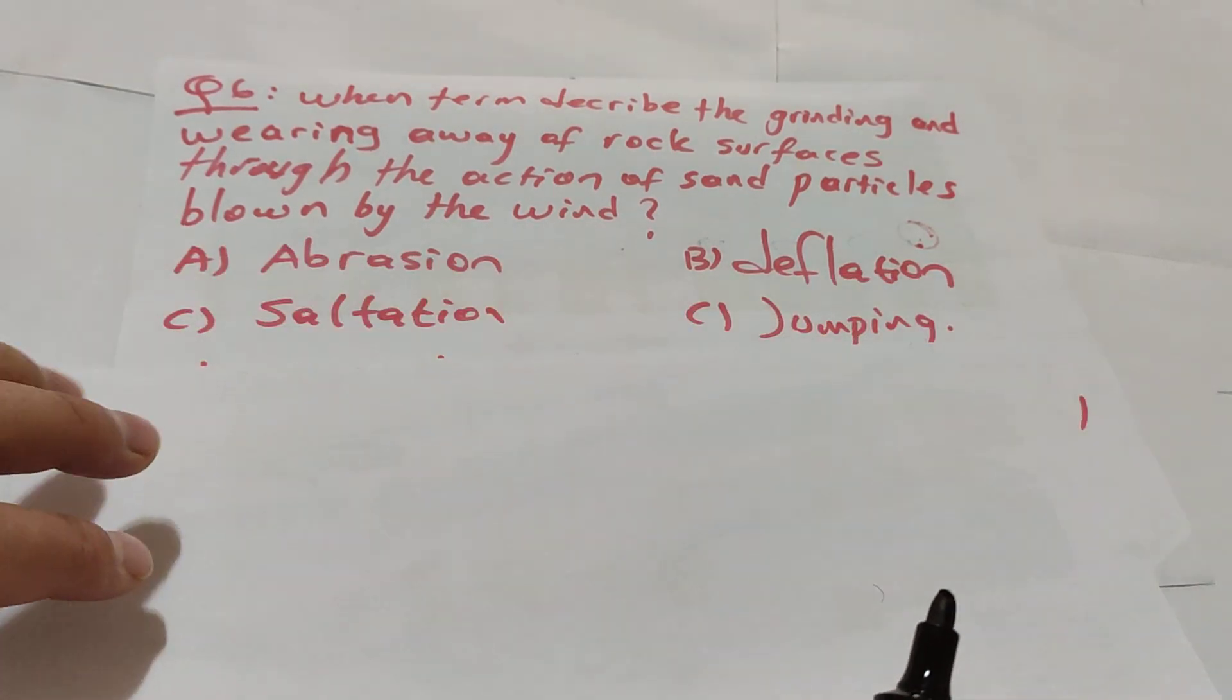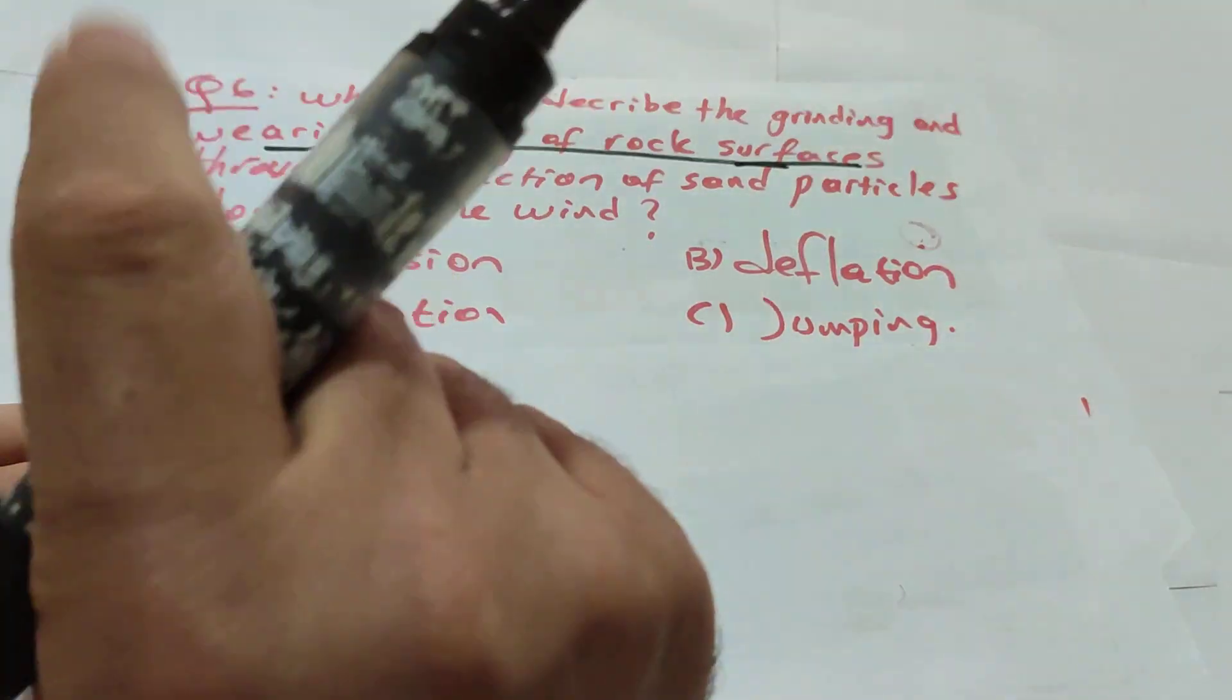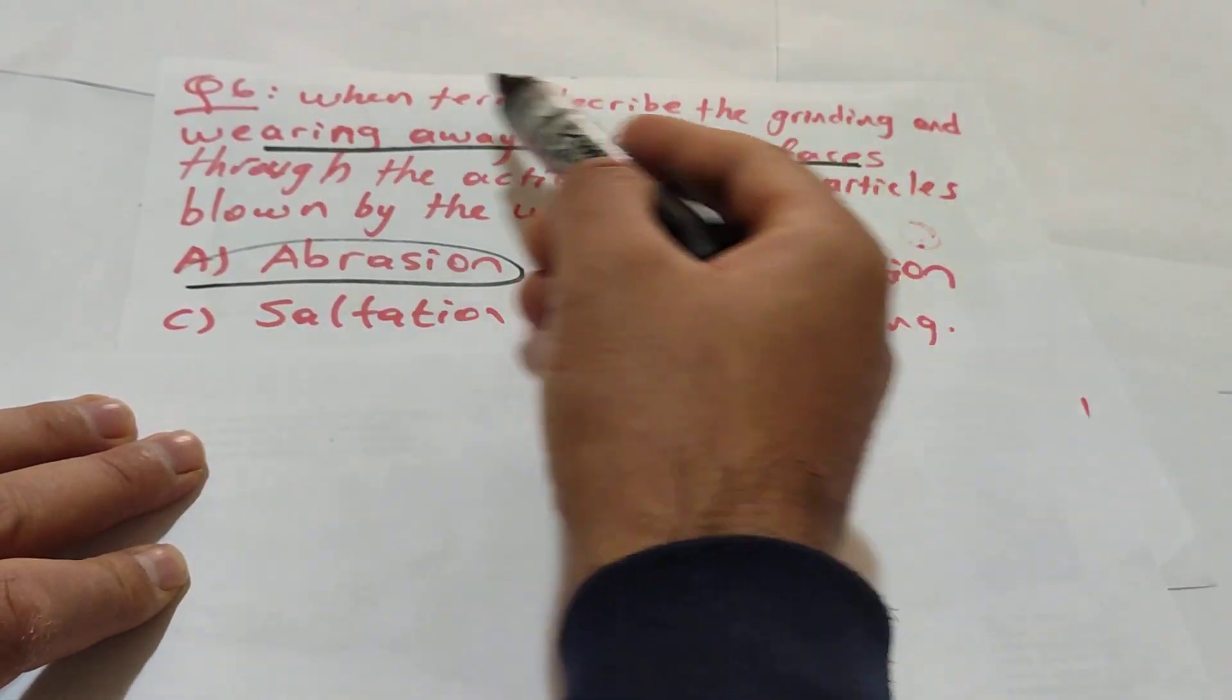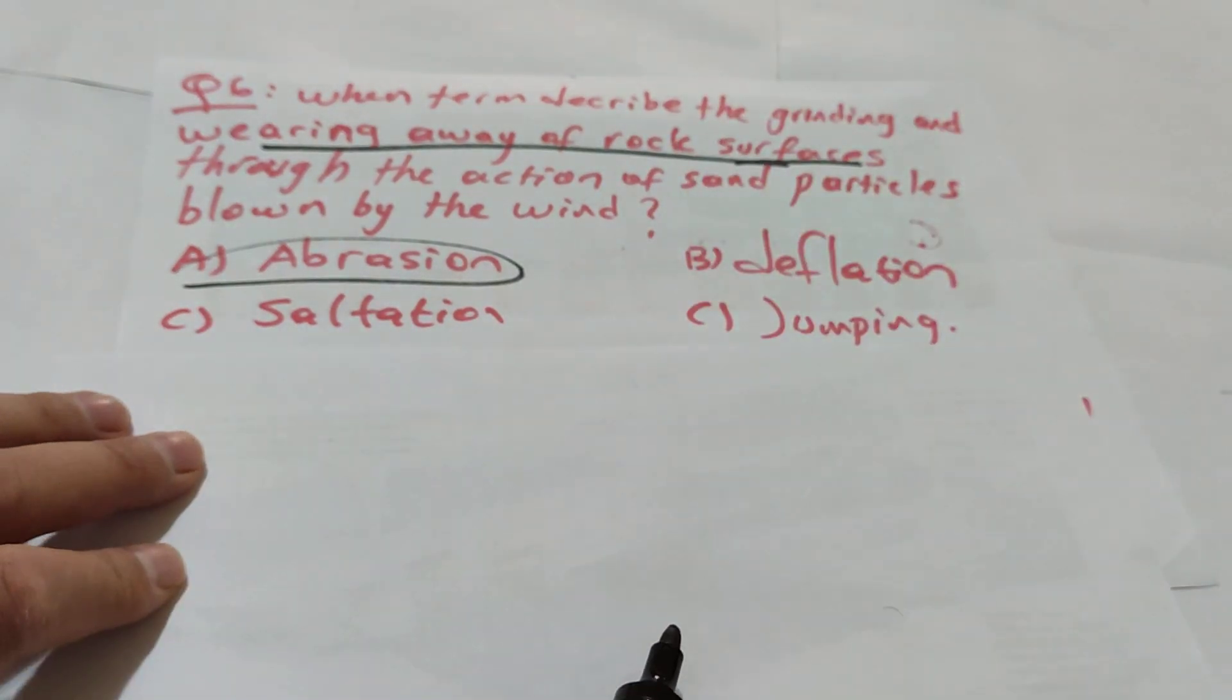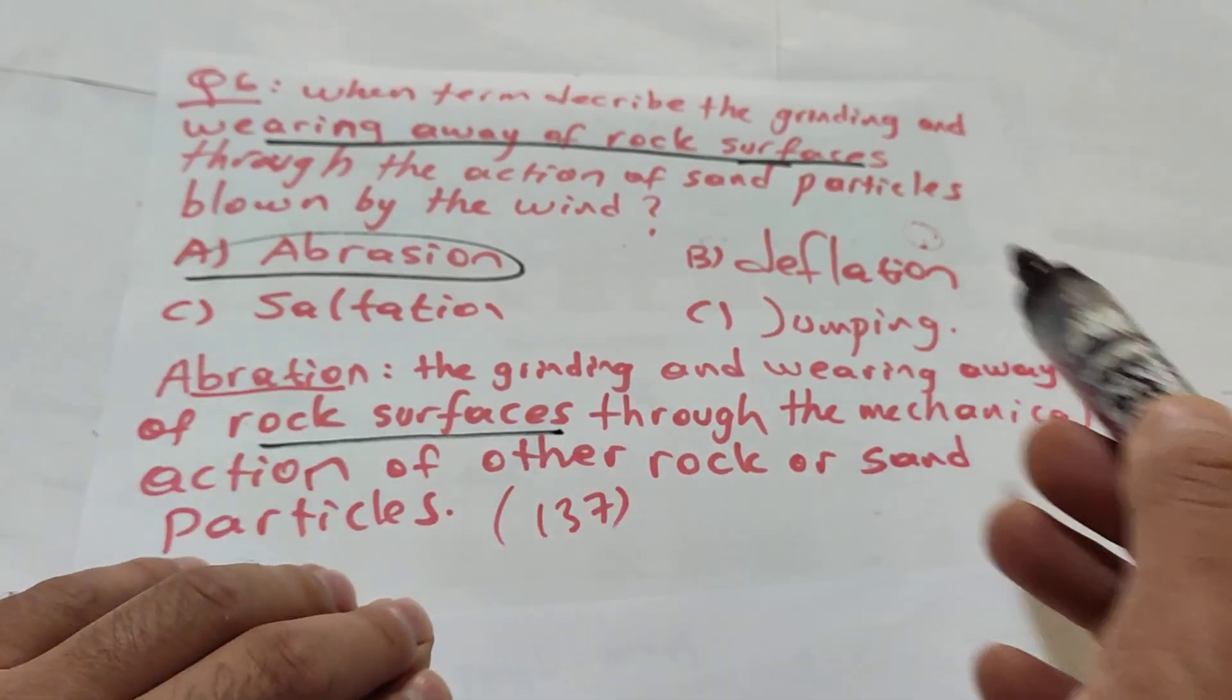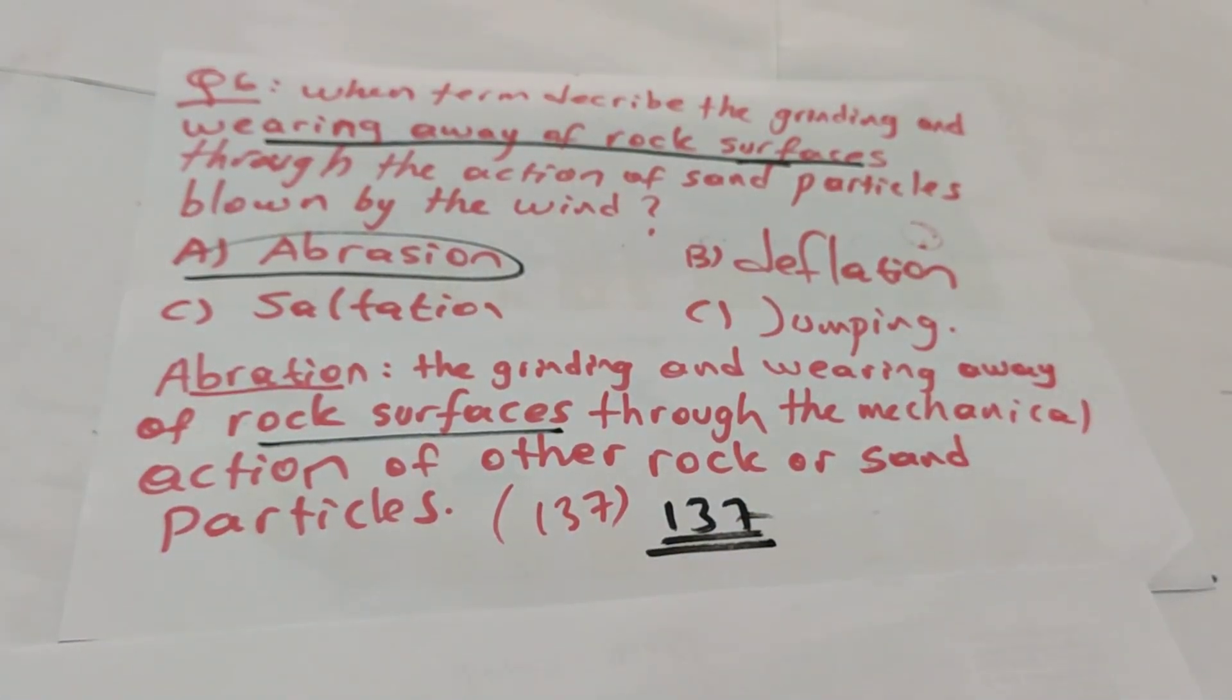Question 6: the term that describes the grinding and wearing away of rock surfaces. Very important. When you see that sentence you are going to remember: through the action of sand particles blown by winds, it is going to be of course abrasion. Surface of earth rocks. When you see surface of rocks, you are going to understand abrasion. Abrasion and weathering very important. Abrasion: the grinding and wearing away of rock surface through the mechanical action of other rocks or sand particles. You can find that sentence from page 137.